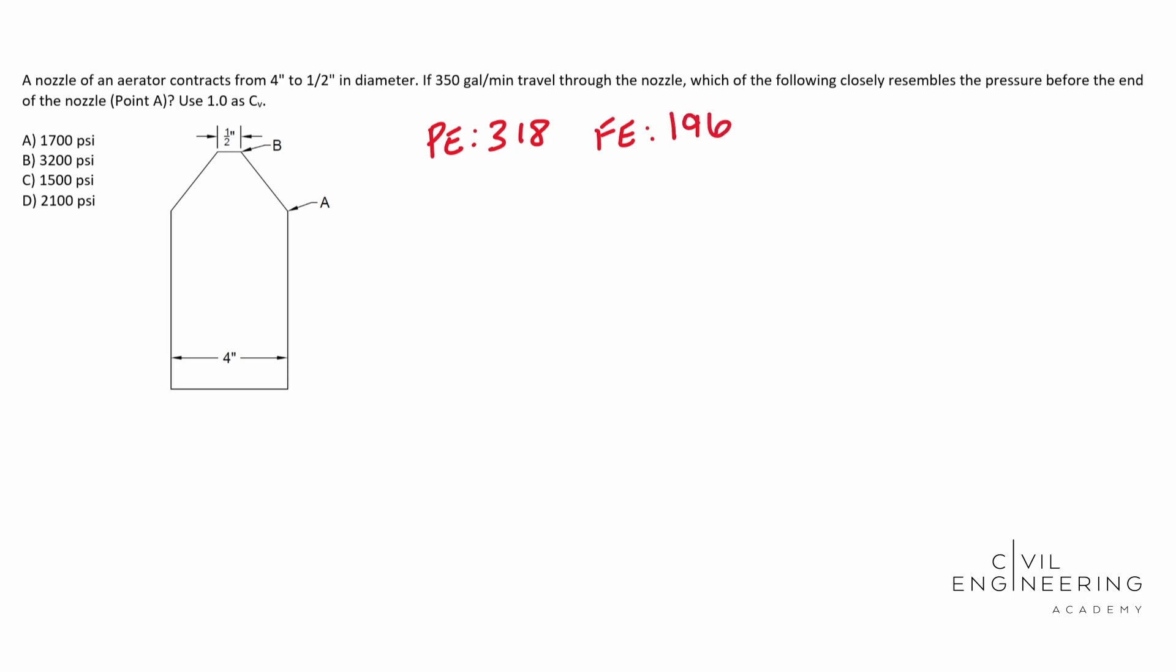Okay, so whenever you look on that, you will find a formula that looks a little bit like this. The flow rate is equal to CV times area two over the square root of one minus area two over area one. And this guy is squared.